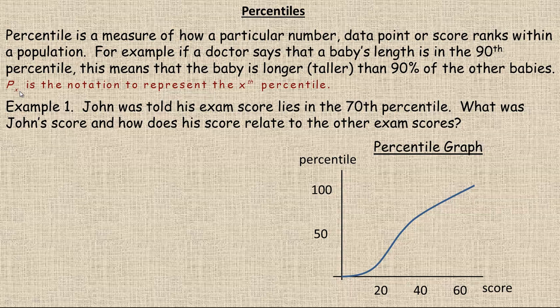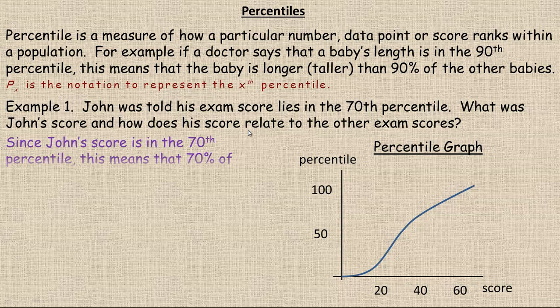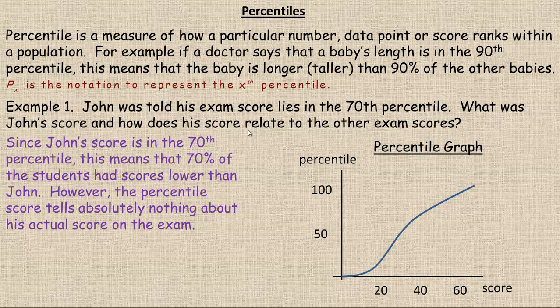P sub x represents the notation for the x percentile. So if there's a certain number here like 20, then that would represent the 20th percentile. In the first example, we're told that John was told his exam score lies in the 70th percentile. So two questions: What was his score and how does his score relate to the other exam scores? If he's in the 70th percentile, then that means that 70% of the other students had scores lower than John. However, that alone does not tell him anything about what his actual score or mark was on the exam.